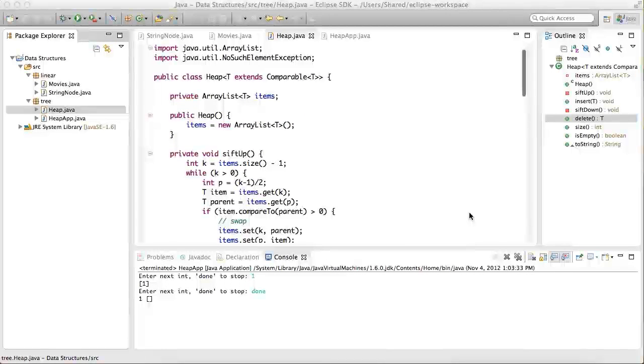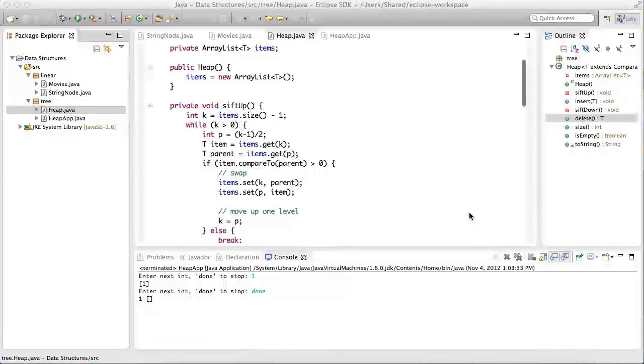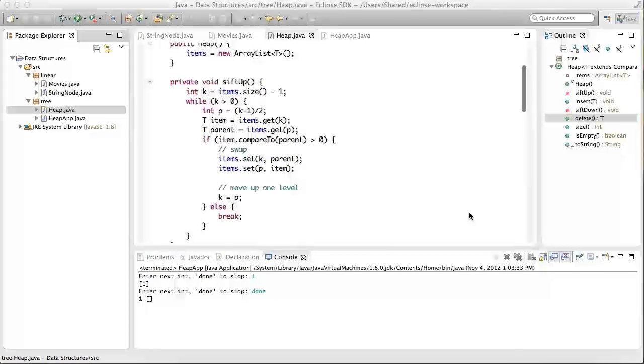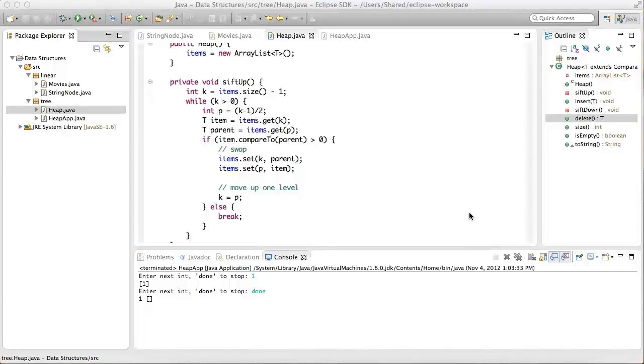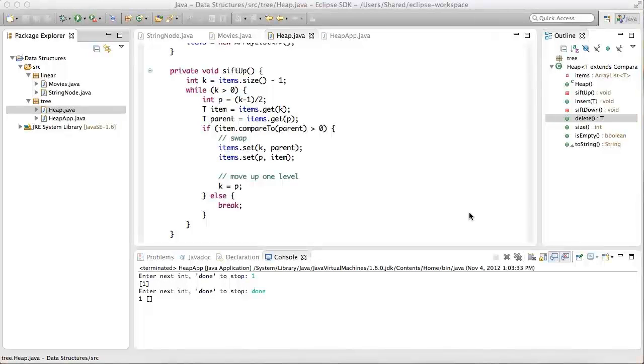Here's the code for sift up that you have already seen. Notice that the sift up method is declared private, because it is not to be called directly from an application, but only from within the insert process.